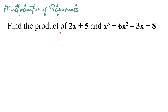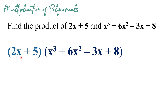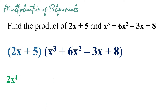Now, what if we have to find the product of 2x plus 5, a binomial, and x cubed plus 6x squared minus 3x plus 8, a multinomial? We start with the first term 2x and multiply it to each term of the multinomial. First, 2x times x cubed: the exponent of x is 1, so we add 1 and 3 to get 2x raised to 4. Then 2x times 6x squared: 2 times 6 gives 12, and x times x squared gives x cubed, so we have 12x cubed.